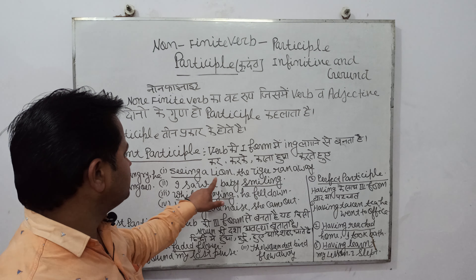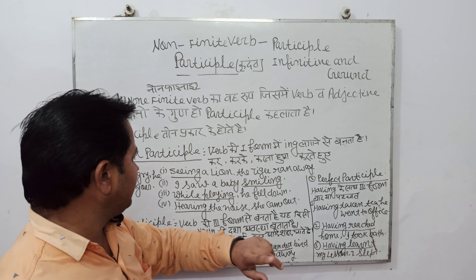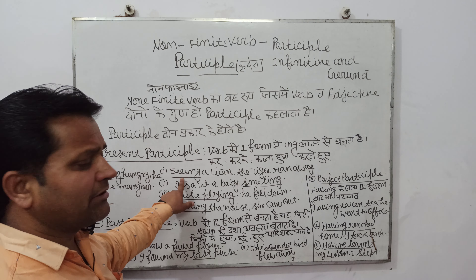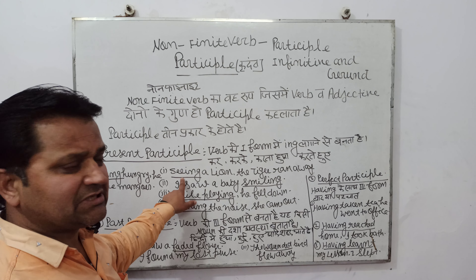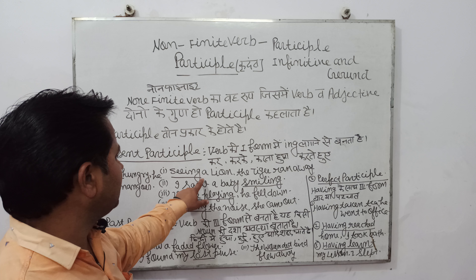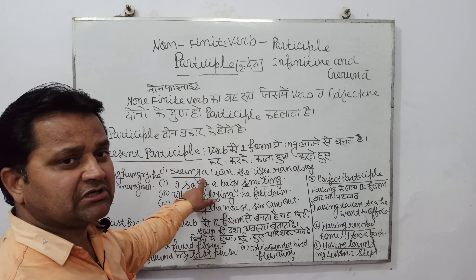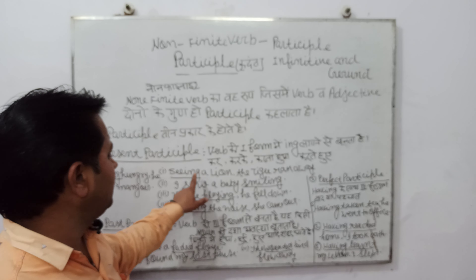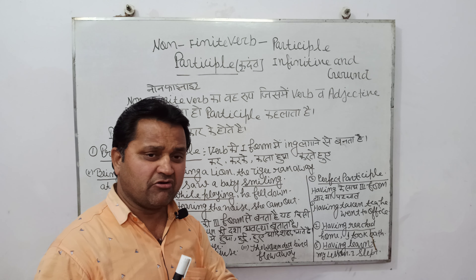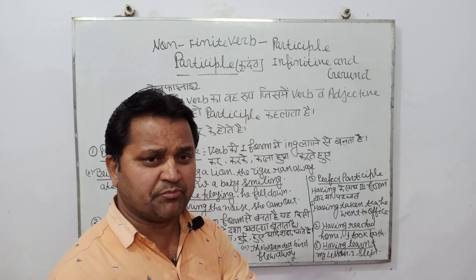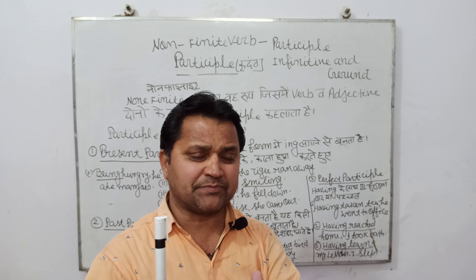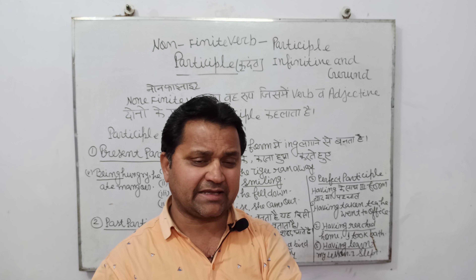Seeing a lion, the tiger ran away. Sher ko dekhkar, cheeta bhaag gaya. Is sentence mein 'seeing' jo hai, wo present participle hai, kyunki ye verb ki first form mein 'ing' lagane se bana hai. Aur iska arth nikla hai — dekhkar.